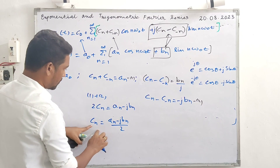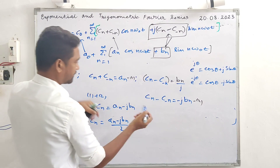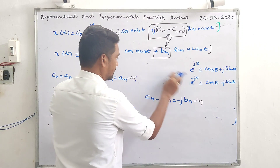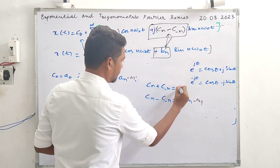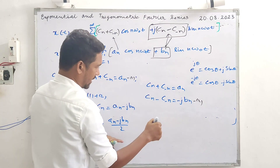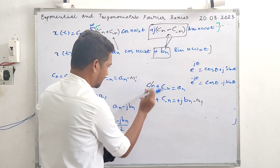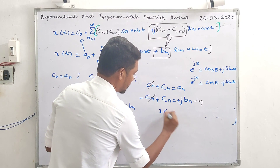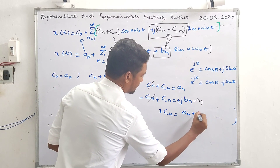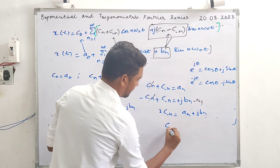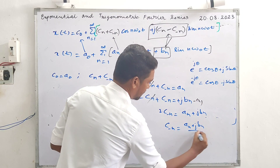Doing 1 minus 2: c_n plus c of minus-n minus (c_n minus c of minus-n) gives 2 c of minus-n equal to a_n plus j b_n. Therefore c of minus-n equals (a_n plus j b_n) upon 2. These are our two key expressions for the exponential Fourier coefficients in terms of trigonometric coefficients.